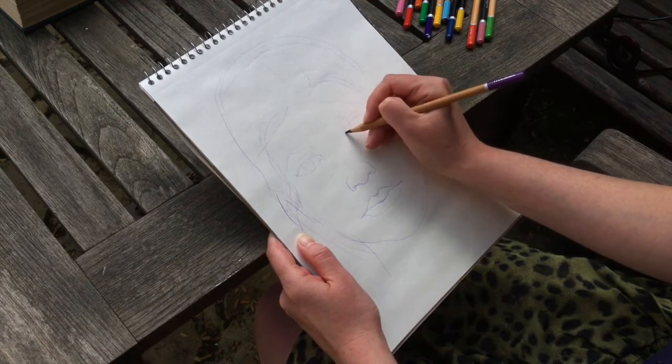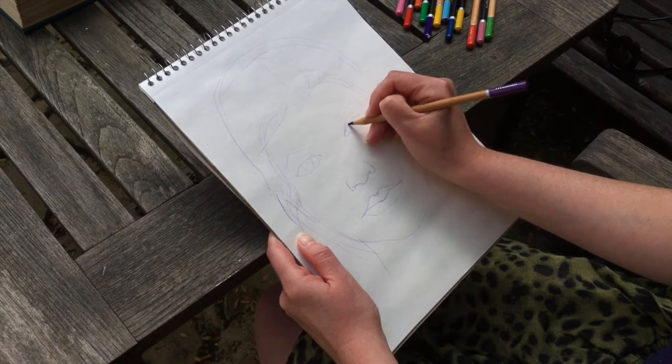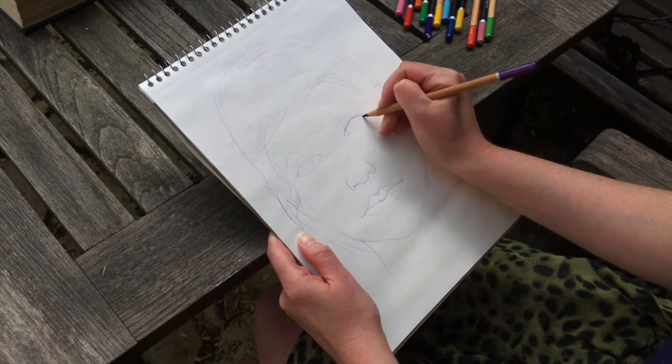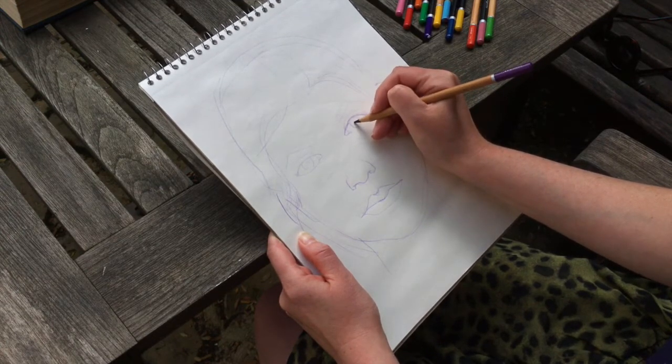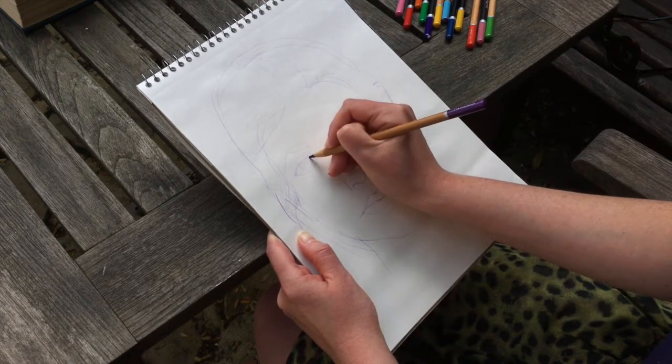And as you feel more confident, you can start making the lines a bit darker. And draw in more details because you know you've got them in the right place. Draw the eyelashes in a bit more. And it starts to really come together.